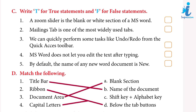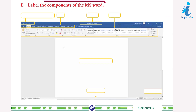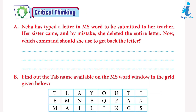Match the following: one, title bar matches with B; two, ribbon matches with D; three, document area matches with A; four, capital letter matches with C. Label all the components of MS Word — do it yourself.